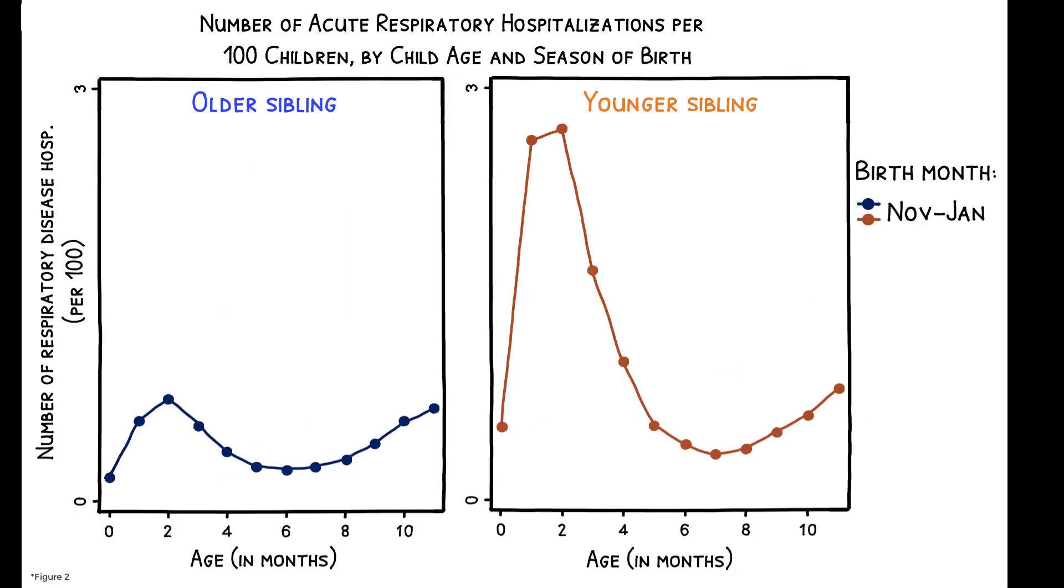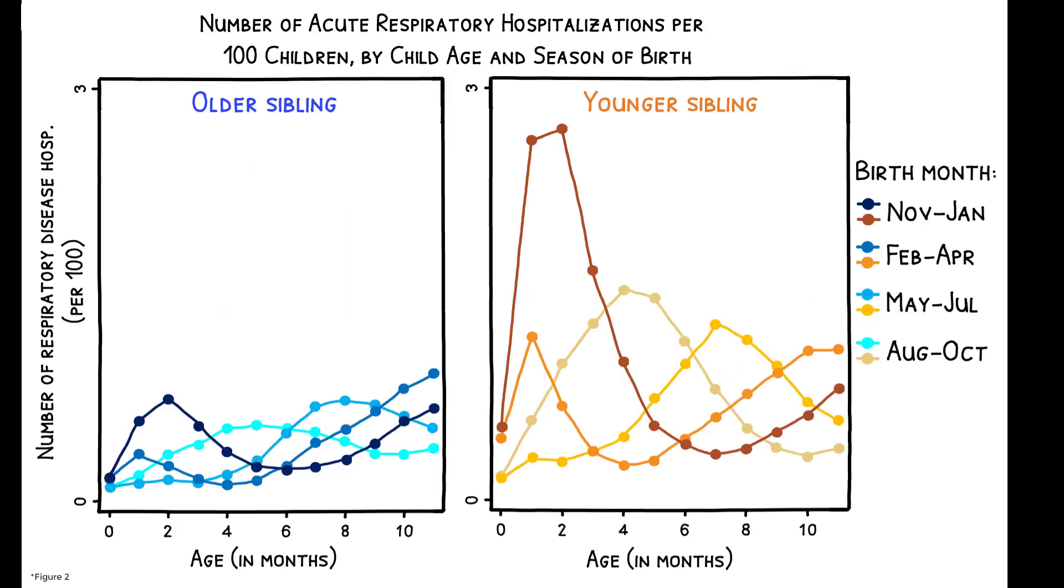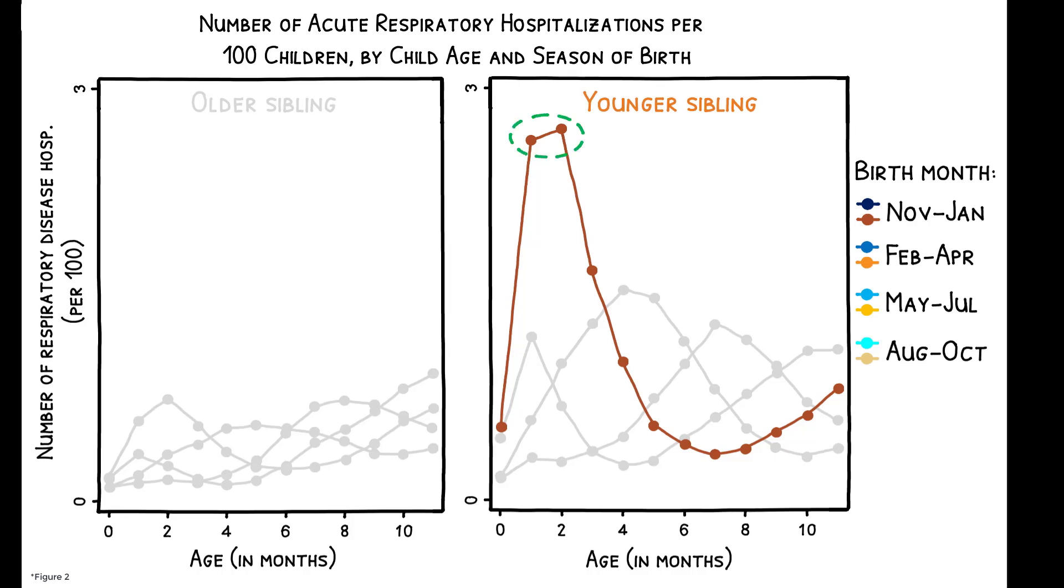Younger siblings have higher hospitalization rates regardless of season of birth, and for all children, hospitalizations are higher in the winter when common respiratory disease outbreaks are more prevalent. This means that of all subgroups, younger siblings born in the winter months have the highest hospitalization rates when they are 1 to 2 months old, indicating that this group is particularly susceptible to severe respiratory infections during early infancy.